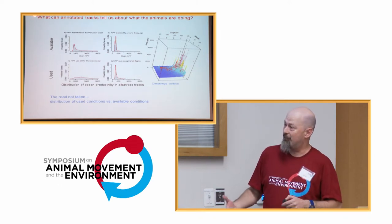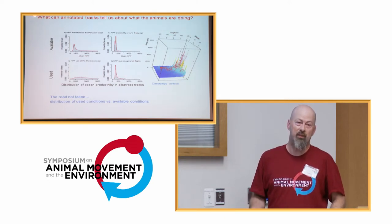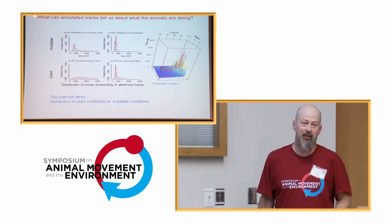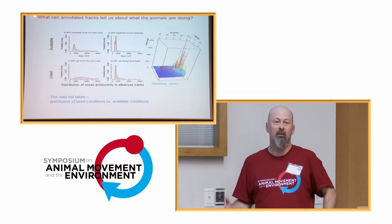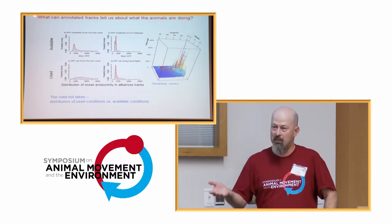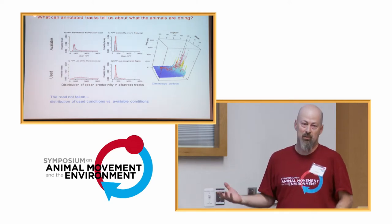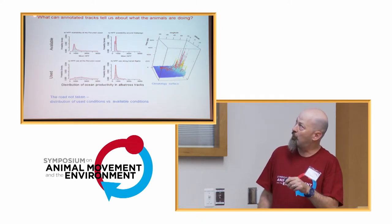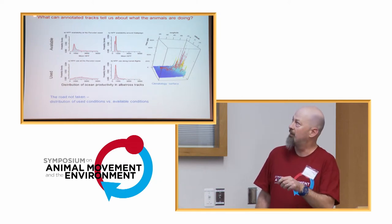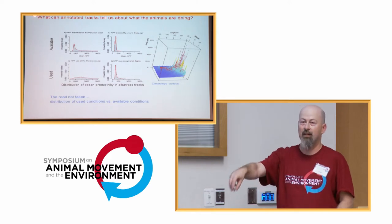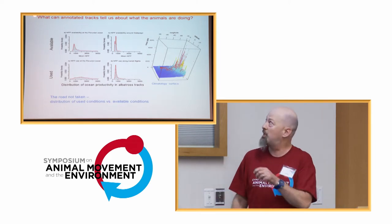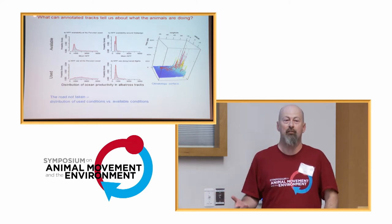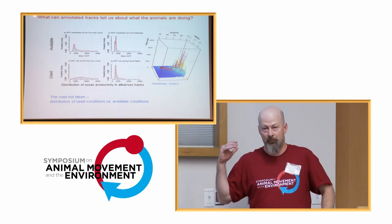That little tail of high productivity is basically the reason why nesting albatrosses - even though they have eggs or chicks in the nest - need to leave for 2-3 days, fly hundreds of kilometers to the Peruvian coast, eat, and come back. Around the Galapagos, albatrosses experience ocean productivity more or less at random. But when they fly to Peru, they hang around precisely in that rare tail of very high productivity - they really know how to find it.